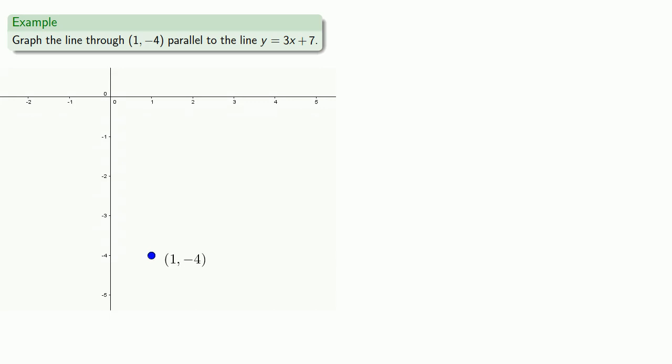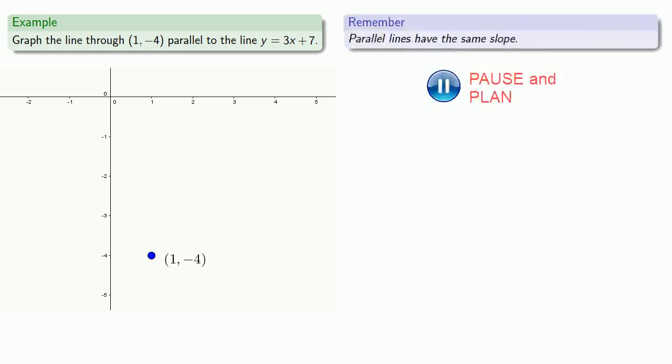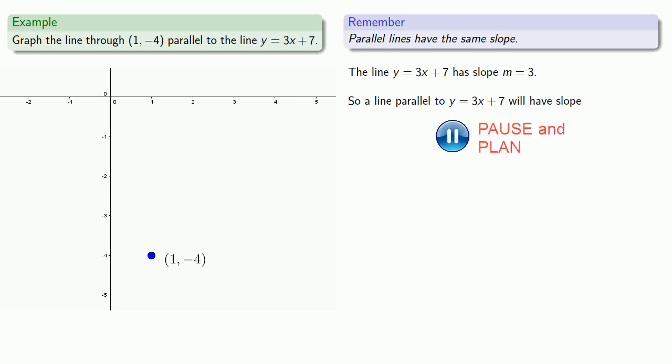Since we're talking about parallel lines, remember parallel lines have the same slope. So the line y equals 3x plus 7 has slope m equal to 3. And so a line parallel to y equals 3x plus 7 will have slope m equal to 3.